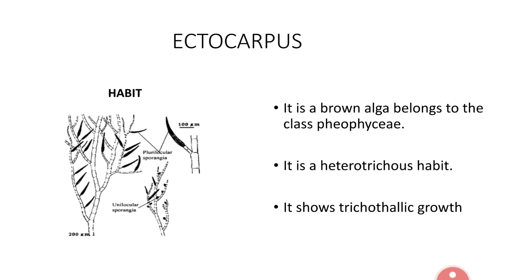Habit: Ectocarpus shows two different stages in its life cycle. One is the Ectocarpus sporophyte stage or asexual stage, and the second is the Ectocarpus gametophyte stage, which is the haploid and sexual stage. The Ectocarpus sporophyte plant is dominant over the Ectocarpus gametophyte.